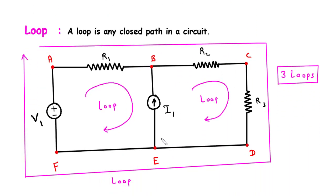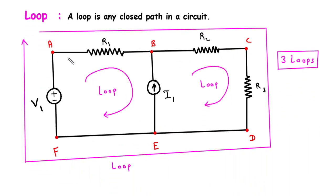Then next is loop. A loop is any closed path in a circuit. So here we can see the path A, B, E, F, A forms a closed path. So this is one loop.